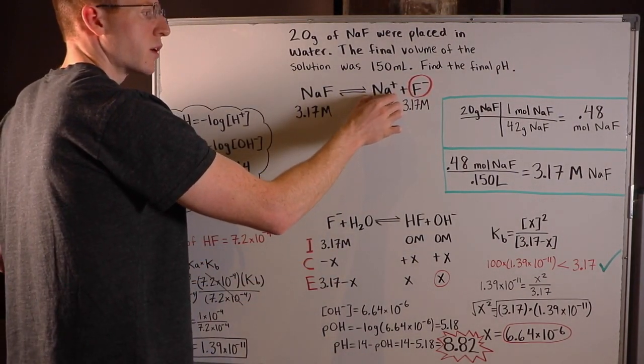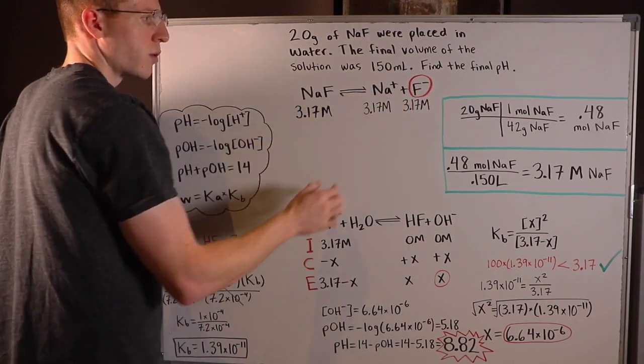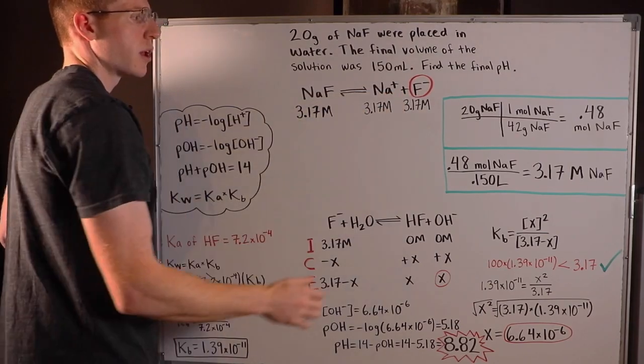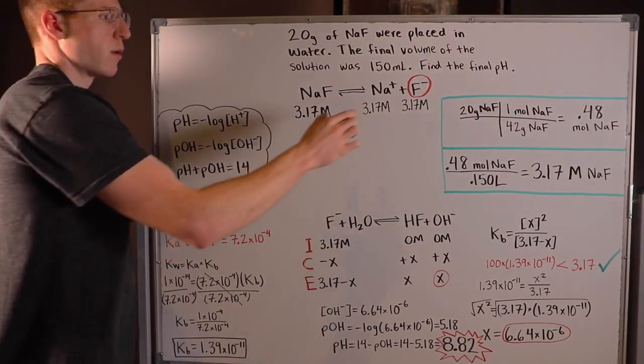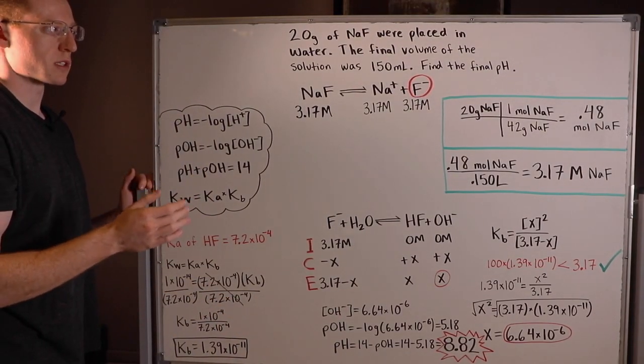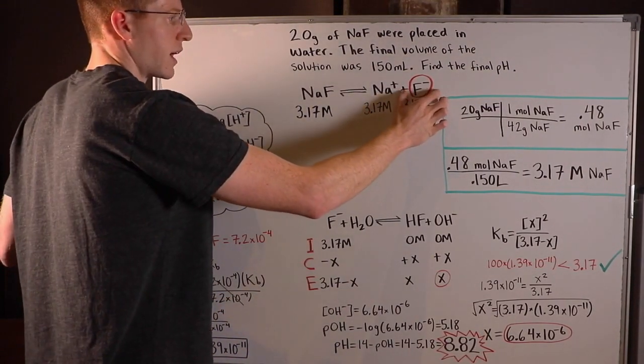Next, you have to consider which, if any, of these ions are going to affect the pH of the solution. So in this case, I know Na+ is going to have no effect on the pH of the solution. However, F- is going to act as a weak base and it will affect the pH of the solution. So that's why I circled it in red here.